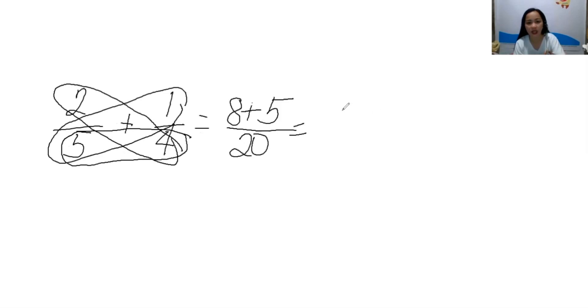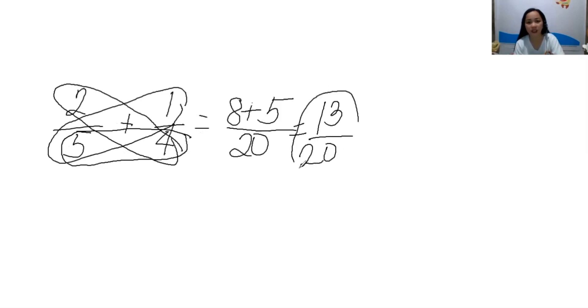Now let's add. The denominator we get by multiplying 5 and 4 which is 20. 8 plus 5 is 13. Copy the denominator which is 20. Therefore, the answer is 13 over 20.